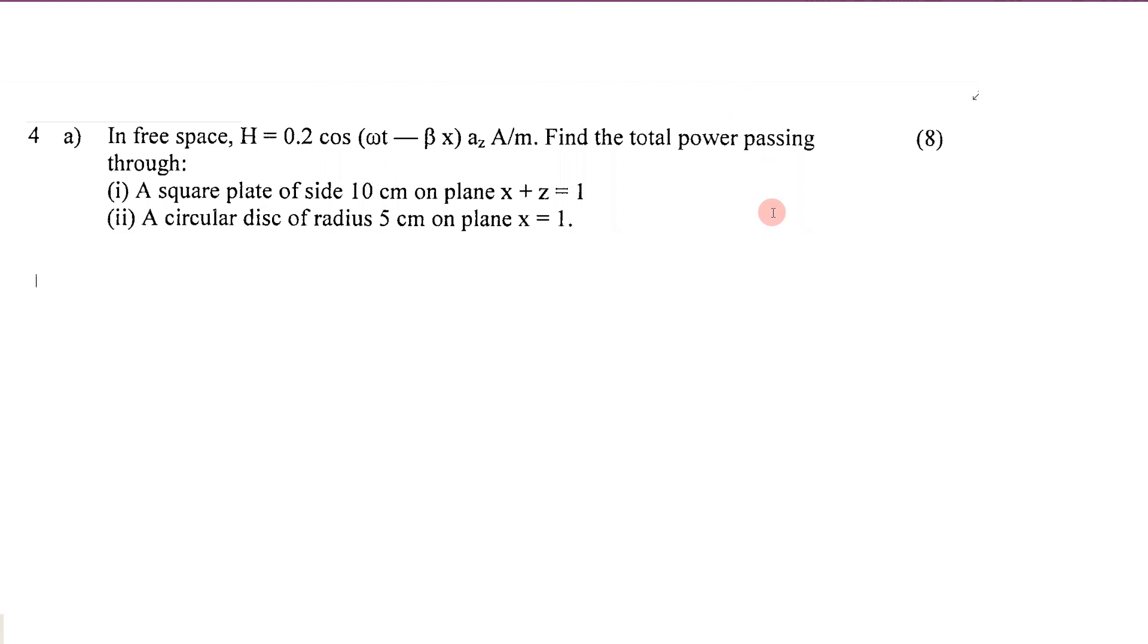You know that the equation for average power is given as P average. In this equation, you know that E0 square by 2 eta into unit vector ak. This is the general equation for average power and the derivation is given in Poynting's theorem.